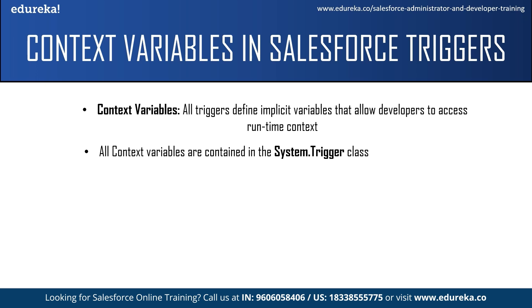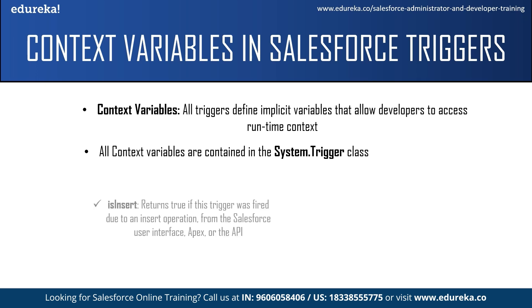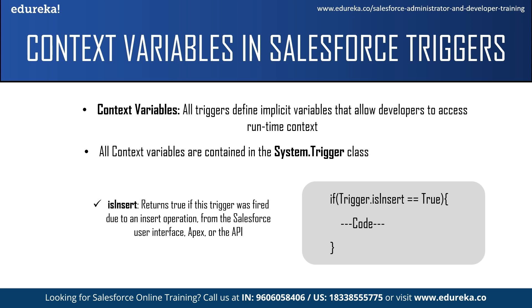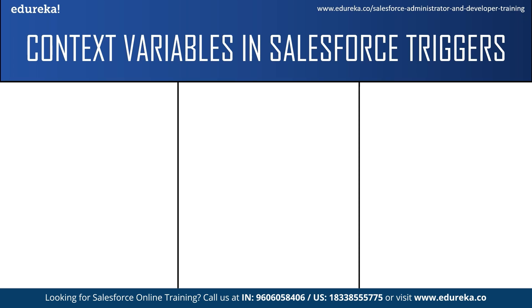The first context variable is isInsert — this returns true if the trigger was fired due to an insert operation from the Salesforce UI, Apex, or APIs. For example: if (Trigger.isInsert == true) — only then will the set of code be executed. It checks a condition, and only if true will the code execute. The next context variable is isUpdate, which returns true if the trigger was fired due to an update operation.